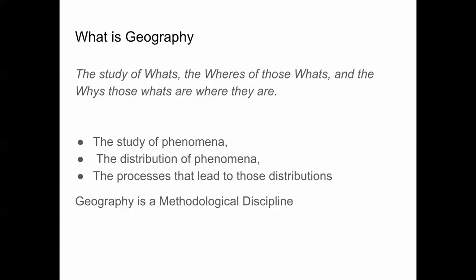And then we're going to look at the why's, which are the processes that lead to distributions. Why do religions occur in some places and not in others? How have religions spread through time? How is language different from place to place? What cultural traits or behaviors are located in one place and not another? In this sense, geography is a methodological discipline — it looks at anything, but through the lens of space and place.